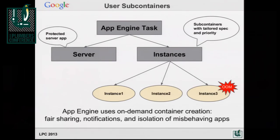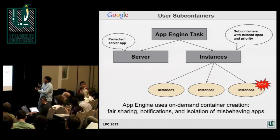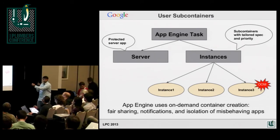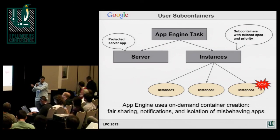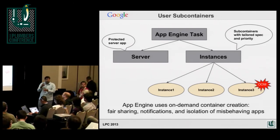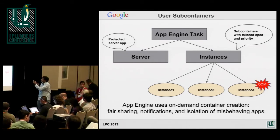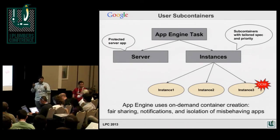This is another case: we have a lot of users who depend on user subcontainers. For example, App Engine runs a server, and every time you start an app it creates a subcontainer underneath it, gives it some values and limits, and makes sure it doesn't go wrong — if it does something really crazy, it will die on its own and the parent job doesn't have to worry about it. This model is used in a lot of jobs at Google, and for this we need support for a job to create hierarchies — what we call safe subcontainers. That's what we've been asking for.